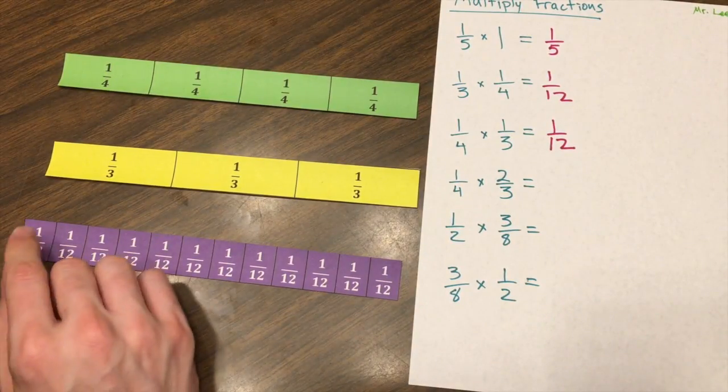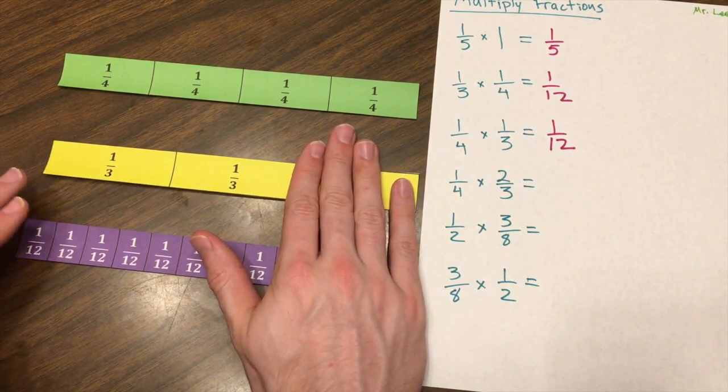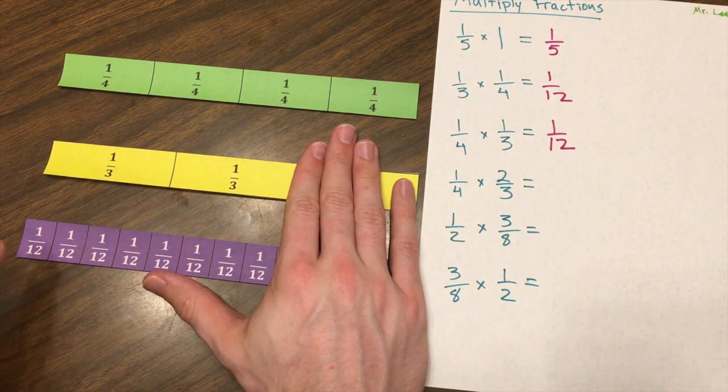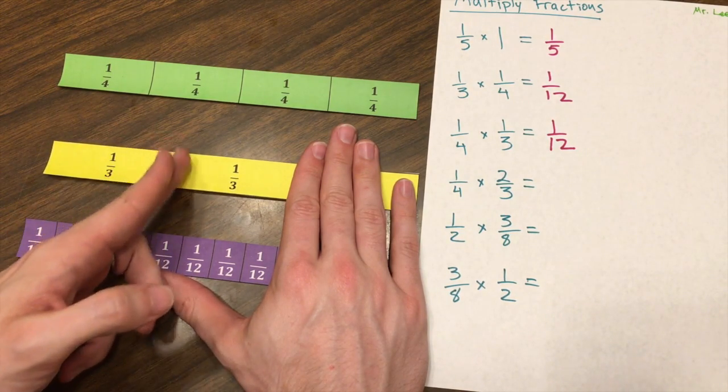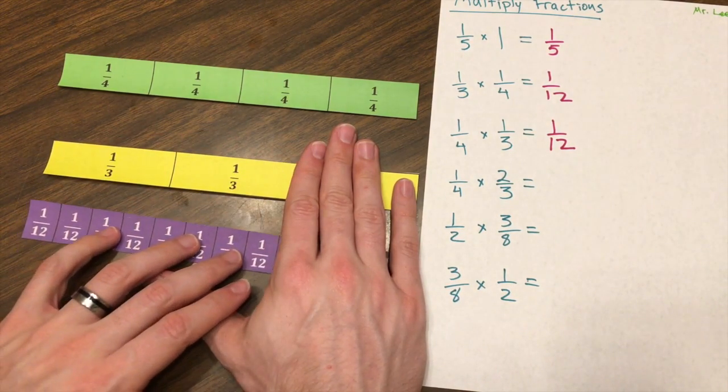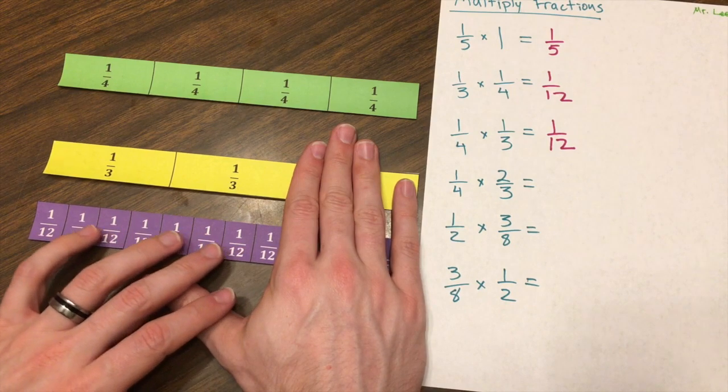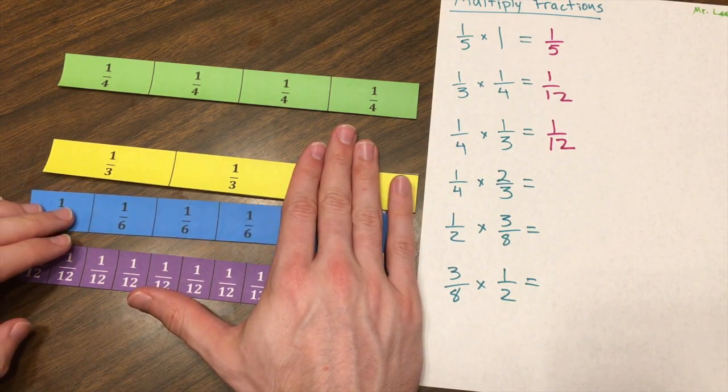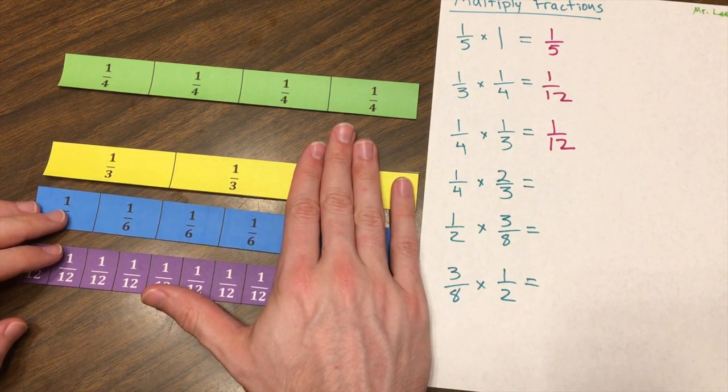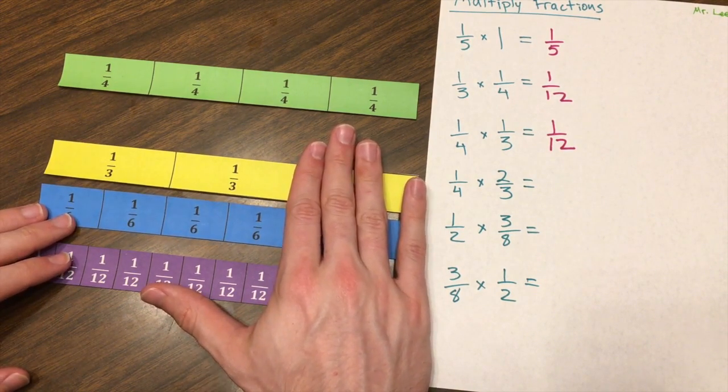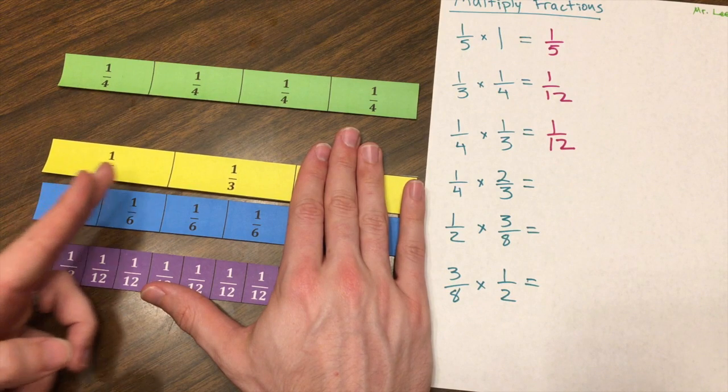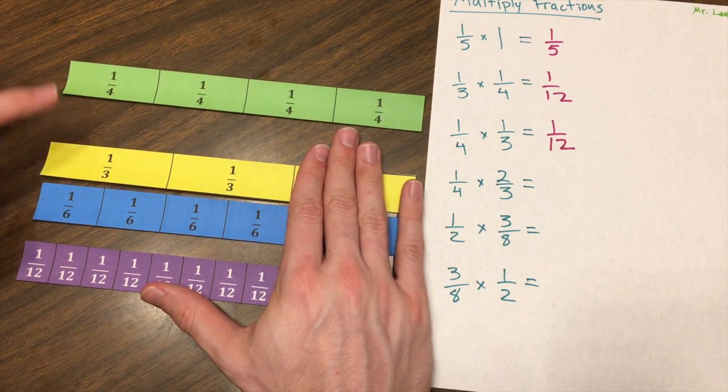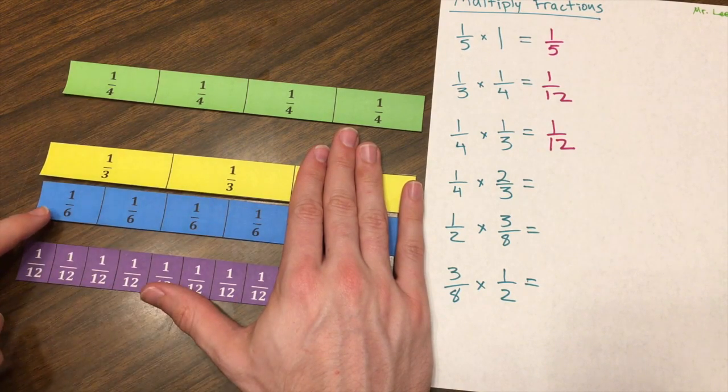So now let's look at one-fourth of two-thirds. I need to split this two-thirds up into four equal parts. If I just eyeball that, that's one, two, three, four. This one-twelfth looks like it works, but it might have another one that might work a little bit better. Let's take a look at this one-sixth. This one-sixth does split this one-third up into four equal parts. So one-fourth of two-thirds is one-sixth.